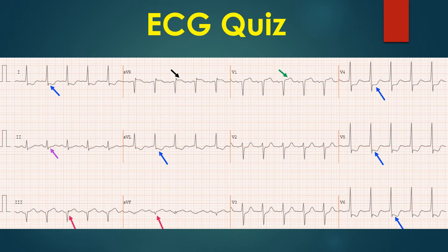QS complexes are noted in leads 3 and AVF, marked by red arrows. Minimal ST depression is seen in lead 2, marked by a violet arrow.